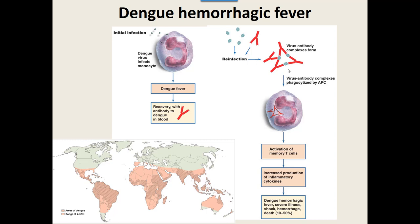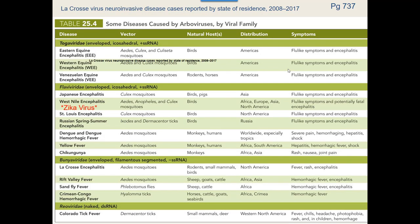This is showing a couple of examples of some viruses in the Togaviridae and Flaviviridae. There's your West Nile virus. The Zika virus is also in the Flaviviridae group and is now in the new textbook — it didn't used to be on this map.